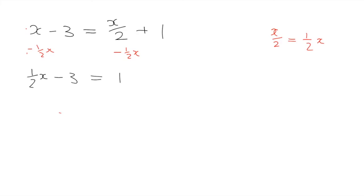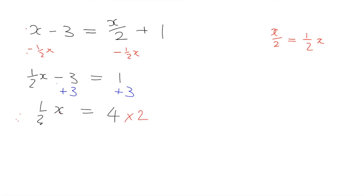We want x's only on the left and numbers only on the right, so we add 3 to both sides to get half x equals 4. But we want x, not half x — x is being divided by 2, so we do the inverse operation and multiply both sides by 2. Two times a half x leaves plain x, and 4 times 2 is 8, so x equals 8.